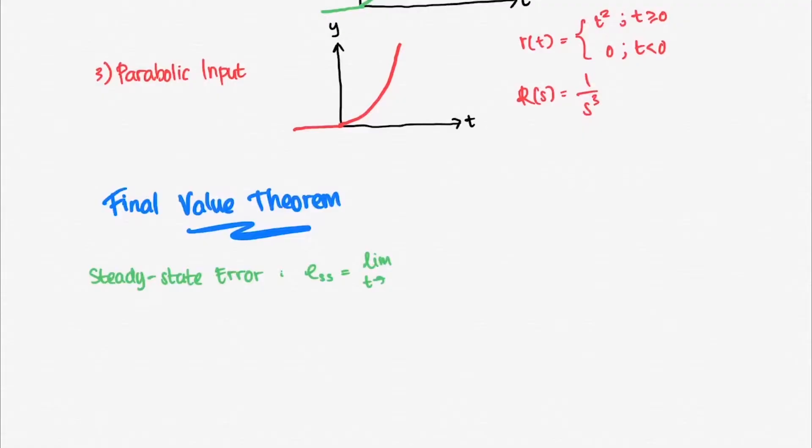Earlier, steady-state error is measured as time approaches infinity, meaning that our analysis is still in the time domain function.